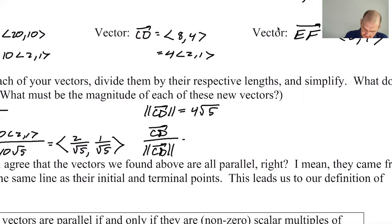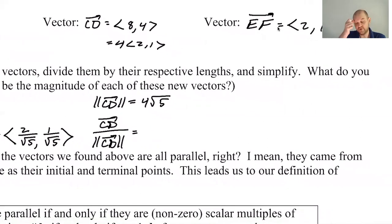If I do CD divided by the magnitude of CD... So what I'm doing right now is called normalizing the vectors. I'm taking a vector and dividing it by its own magnitude. Think about what that must do. You have a vector that starts off with a magnitude of 4 root 5, and then you divide it by 4 root 5. You scaled it down to a vector that has a magnitude of 1.